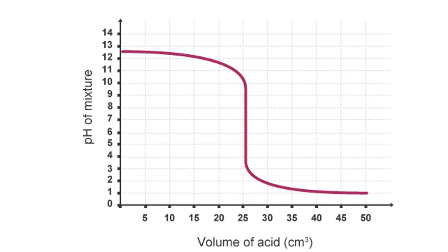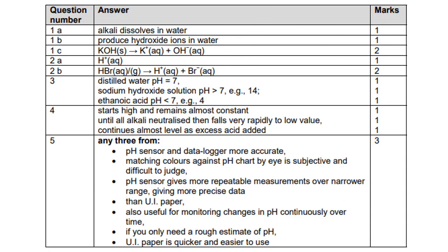For question four: the pH starts high, remains constant, then when the alkali is neutralised, the pH begins to fall very rapidly and continues to fall as more acid is added.